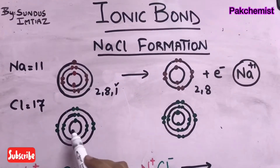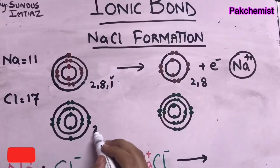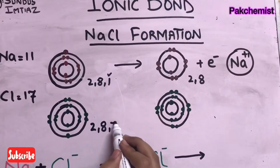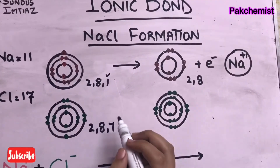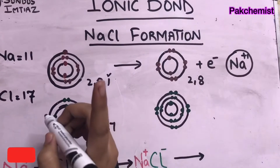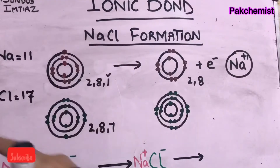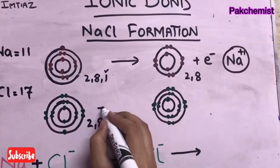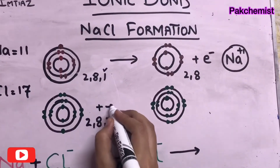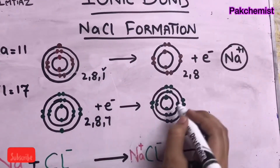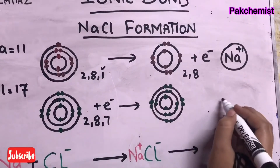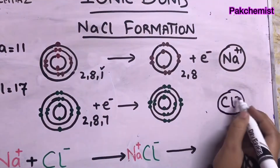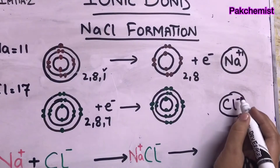Now coming to Cl: Cl has 17 electrons. In the first shell it has 2, in the second shell it has 8, and in the last shell it has 7 electrons. It needs only one more electron to complete its outermost shell, so it will gain one electron and form Cl⁻.